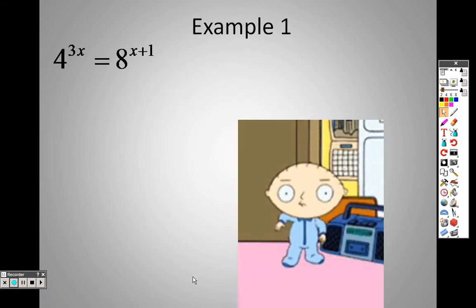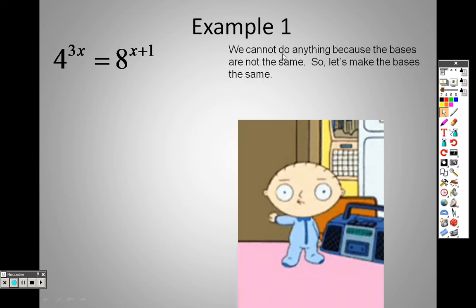So, example 1. What we can do with an item like this is we can try to make the bases the same, and to make the bases the same when solving a problem like this, if you do make the bases the same, then all we have to worry about is the exponents in the problem. We cannot do anything because the bases aren't the same, so let's make them the same.